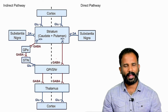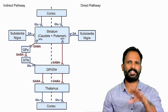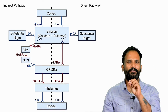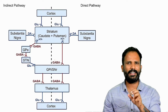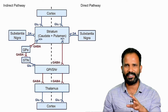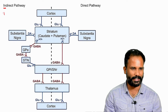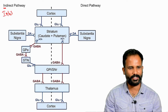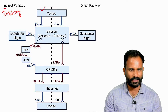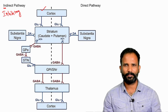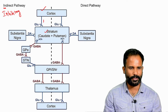Regarding the actions of basal ganglia, with the internal connections and connections with the cortex and thalamus, there are two pathways: the indirect pathway and the direct pathway. Simply stated, the direct pathway is excitatory and the indirect pathway is inhibitory.